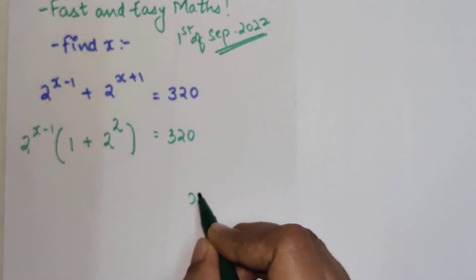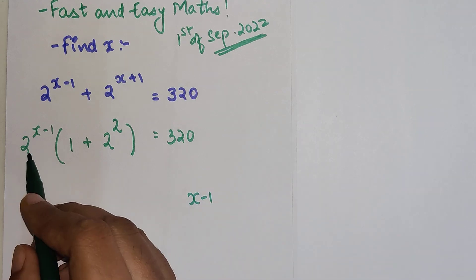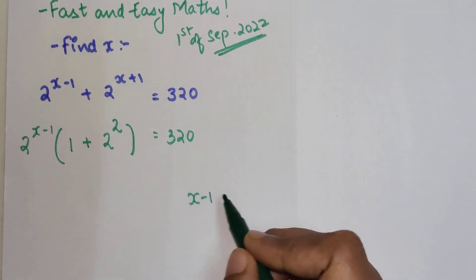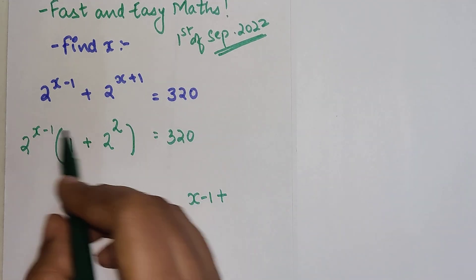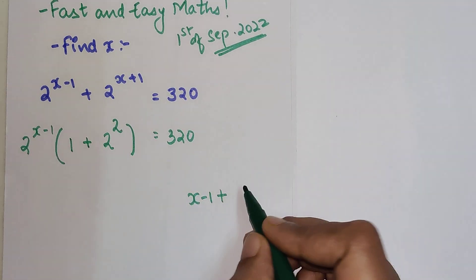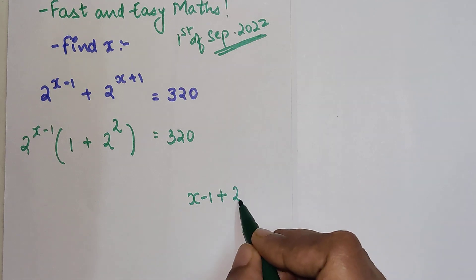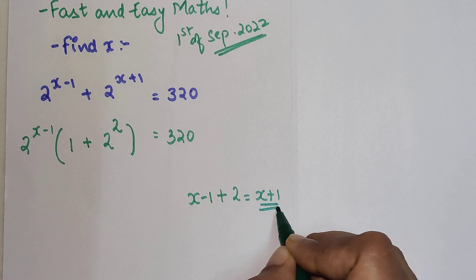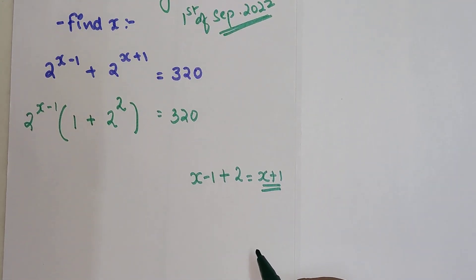Let me quickly explain this. So if I have x minus 1, so 2 raised to x minus 1 gets multiplied inside, I should get 2 raised to x plus 1. Basically, if it gets multiplied, the indices are going to add. So 2 raised to x minus 1 plus 2 will get me 2 raised to x plus 1, in case you all had any doubt.